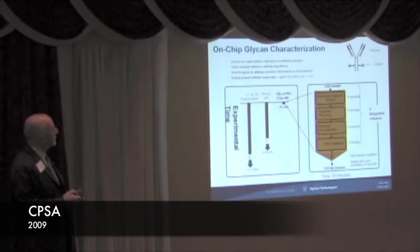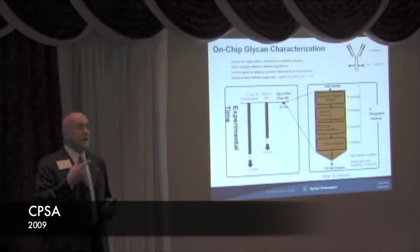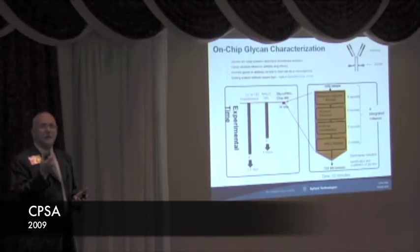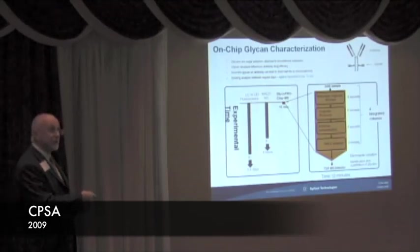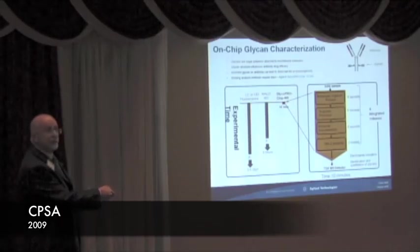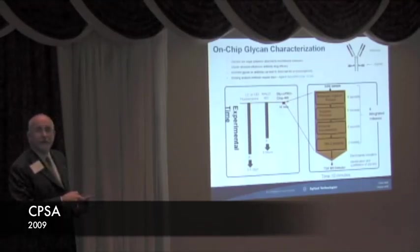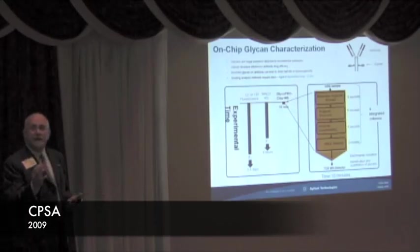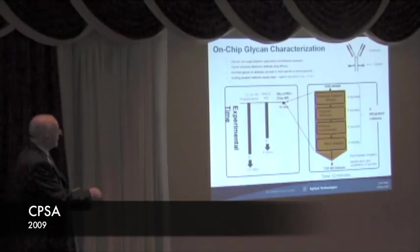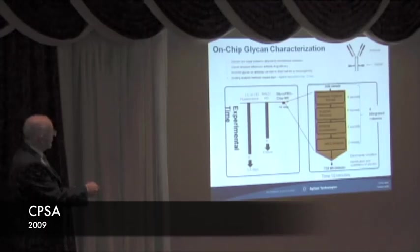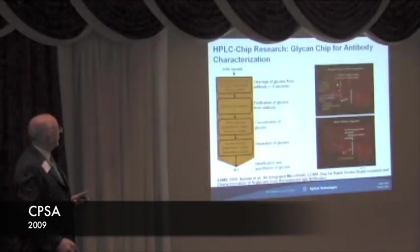We've now introduced and will be making available for sale next year a PNGase F immobilized chip that will allow for on-chip digestion of an antibody. Starting with about 100 nanograms of antibody, in 6 seconds we completely cleave off all of the glycans, and the whole process takes about 10 minutes to analyze all the N-linked glycans on an antibody. This compares to traditional methods — solution-based cleavage with LC or CE fluorescence takes several days, or by MALDI-MS a full day.